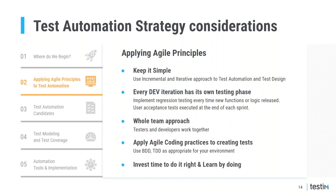Agile principles — team over processes, working software over documentation, collaboration over contracts, and responding to changes instead of blindly following your plan — are all applicable to test automation. Automated test development should be considered like any other software development project. Each development sprint will have its own test creation sprint to test the features built during the sprint. These tests then become part of the regression suite as you move to the next sprint cycle.